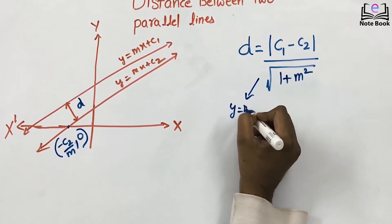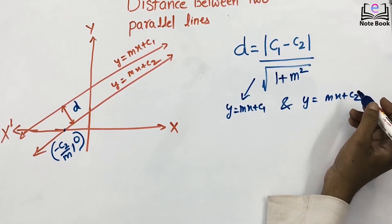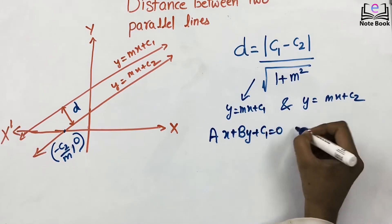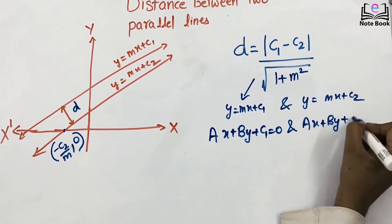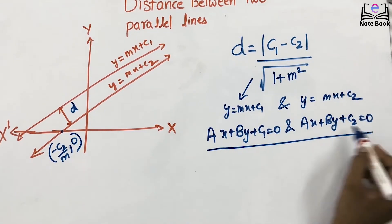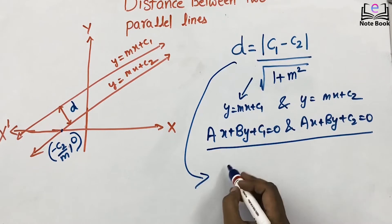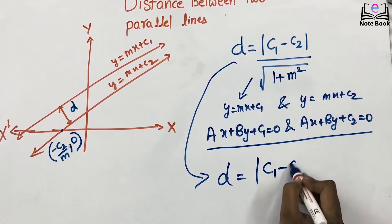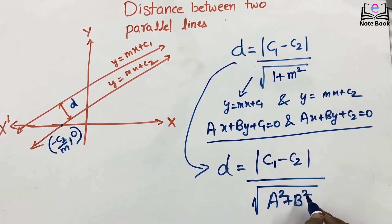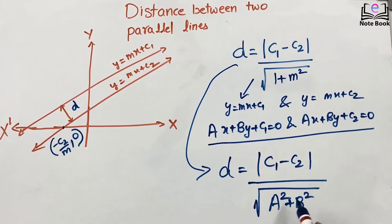This equation d = |c1 - c2| / √(1 + m²) is for the lines y = mx + c1 and y = mx + c2. If instead the equations are in the form ax + by + c1 = 0 and ax + by + c2 = 0, the numerator remains |c1 - c2| and instead of √(1 + m²) we have √(a² + b²). So the distance between two parallel lines is d = |c1 - c2| / √(a² + b²).